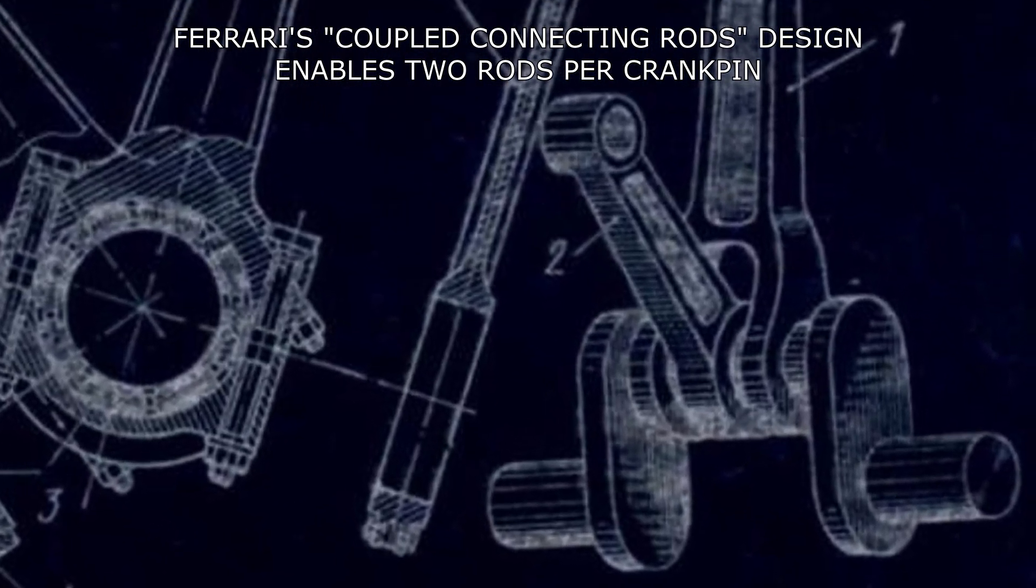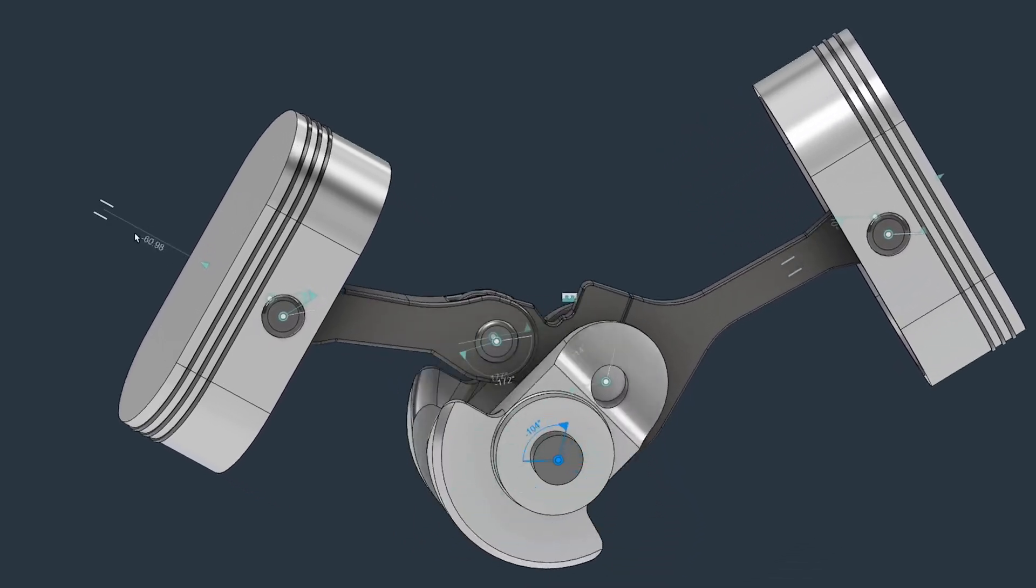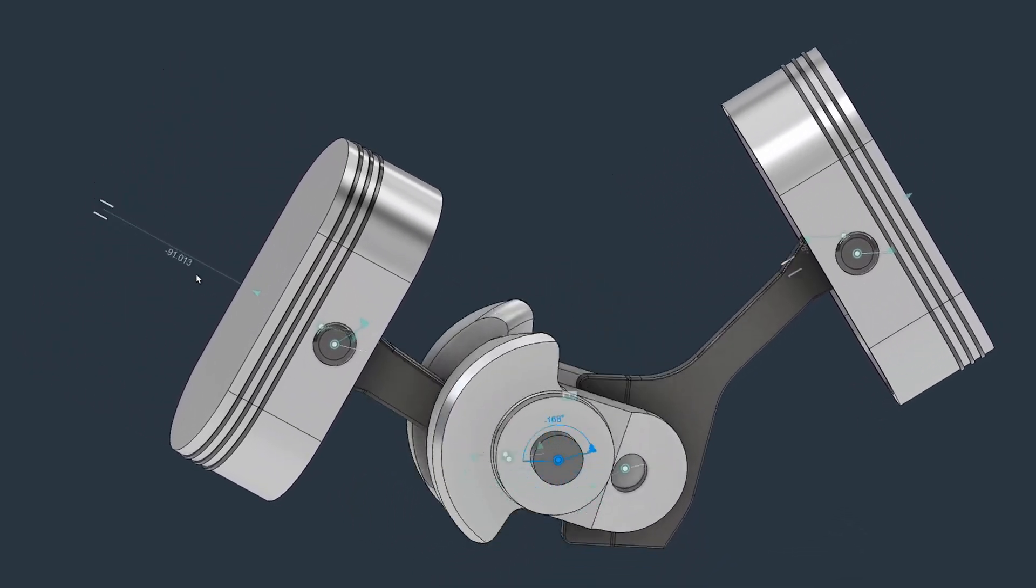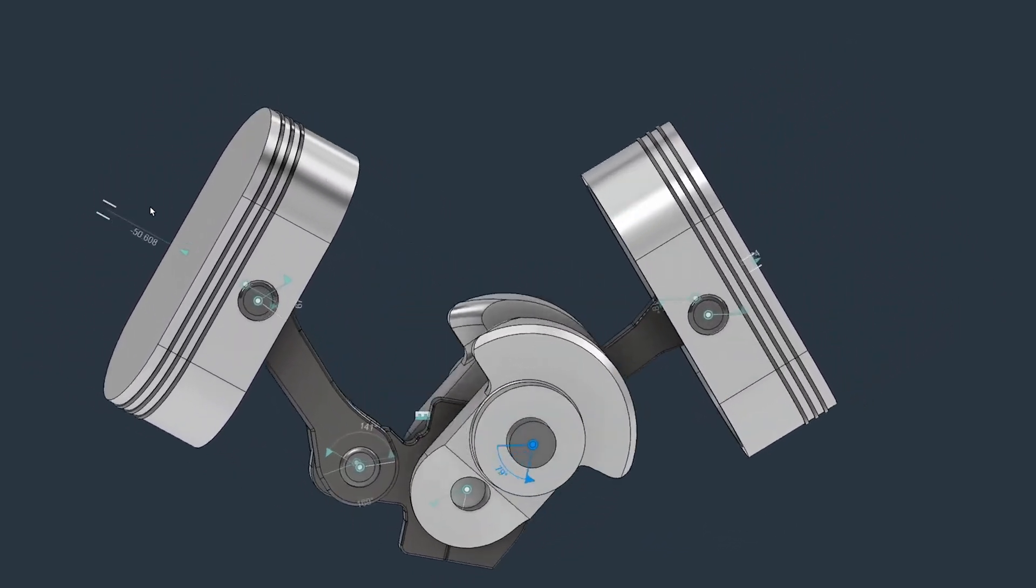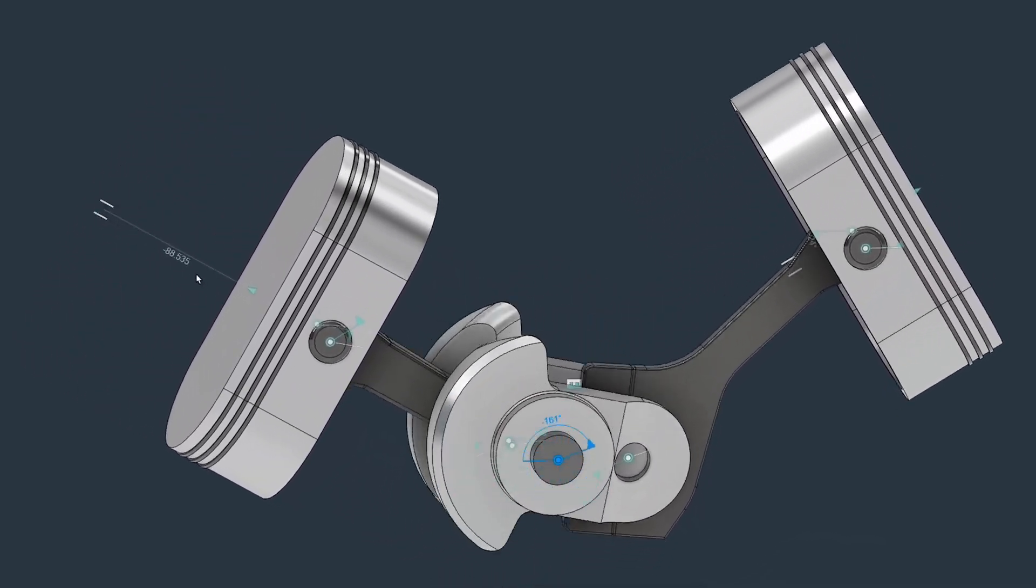But coupled rods do have a significant downside. Since they have different lengths and different motion trajectories, the piston on the main rod and the coupled one will move differently within the cylinder and will even have different compression ratios.